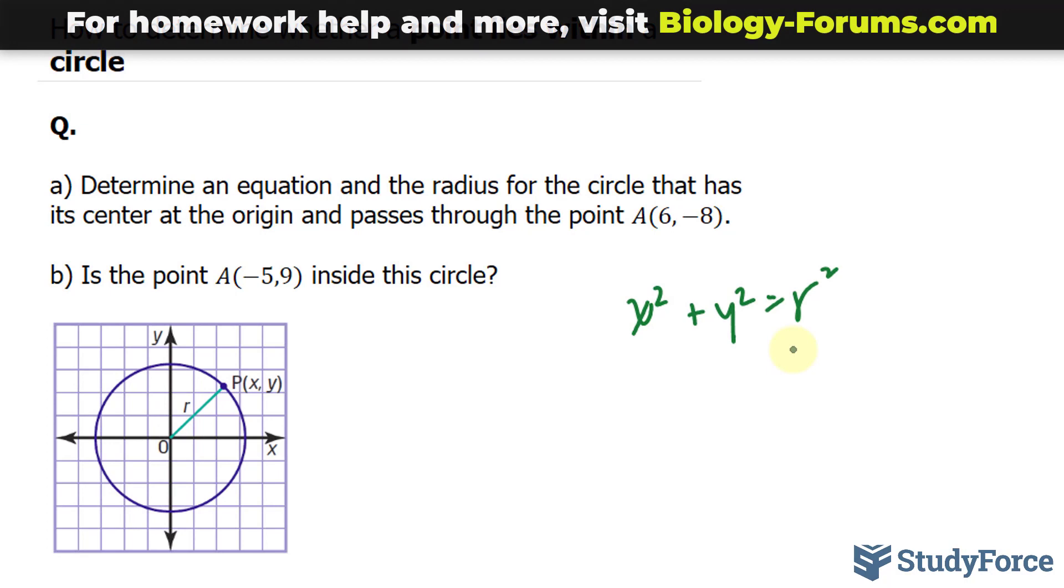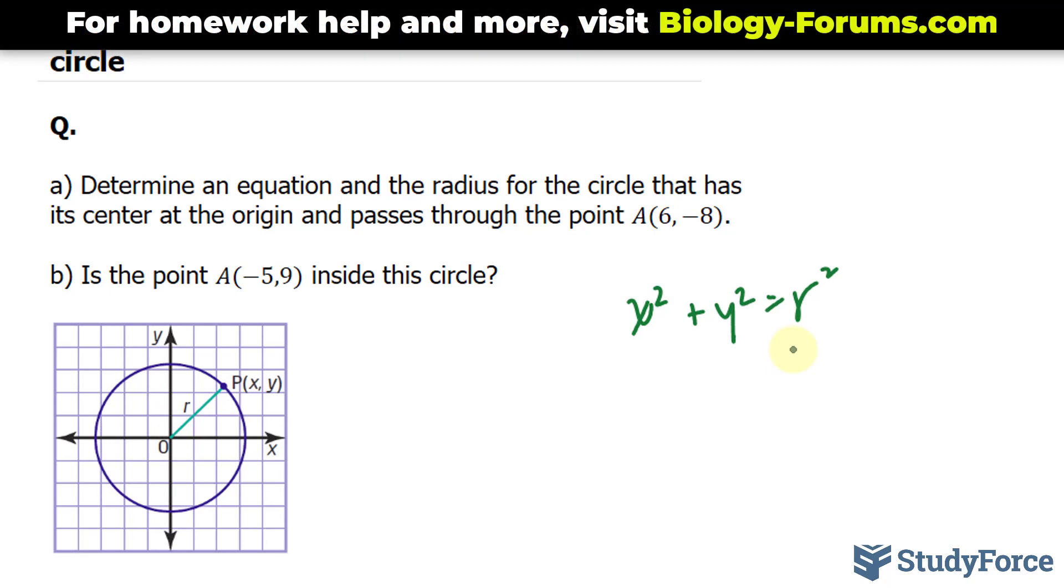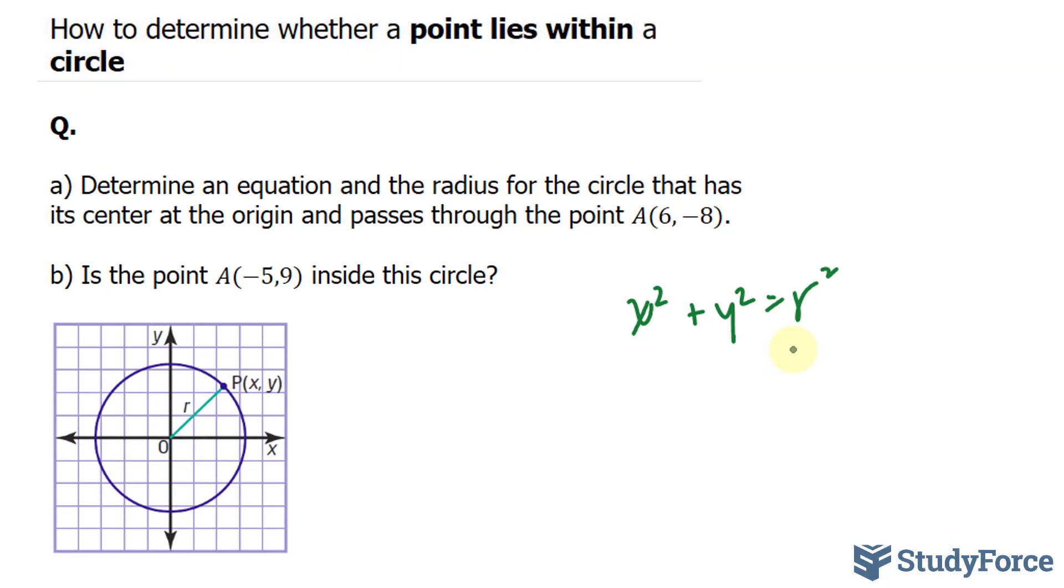So we have to determine an equation and the radius for the circle that passes through the point 6 and minus 8. What I do is I'll take this x coordinate and substitute it into this x and take the y coordinate and substitute it here.